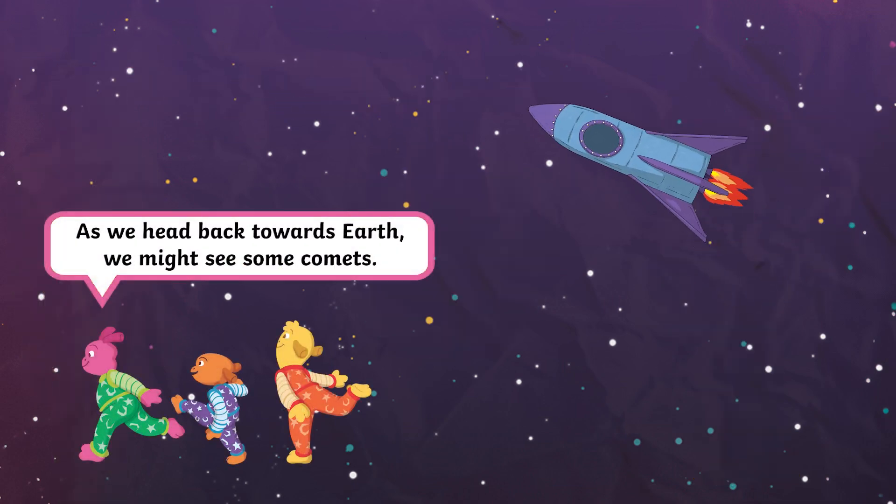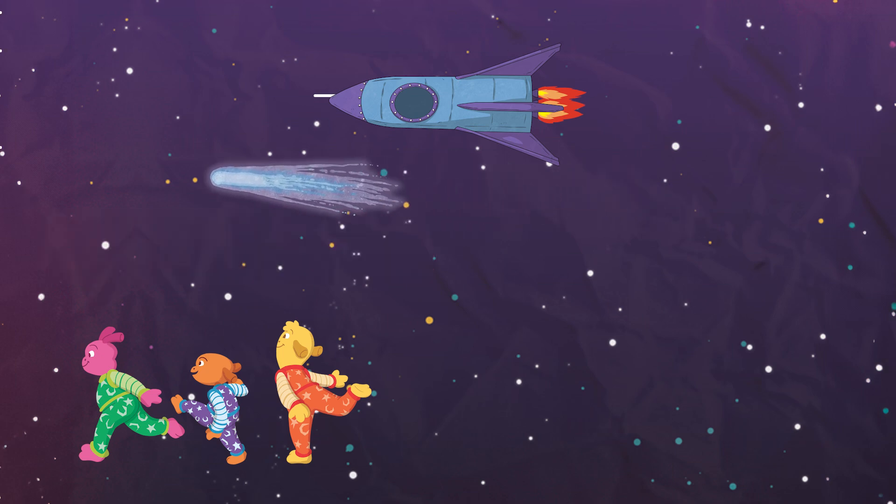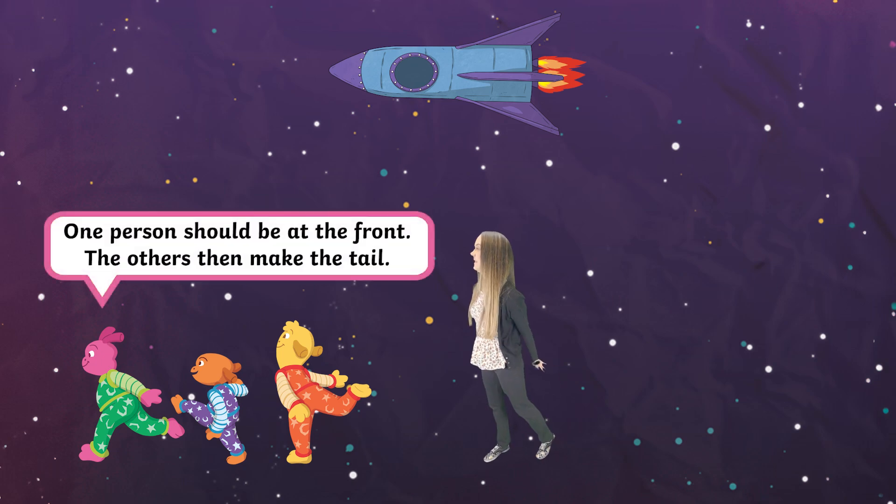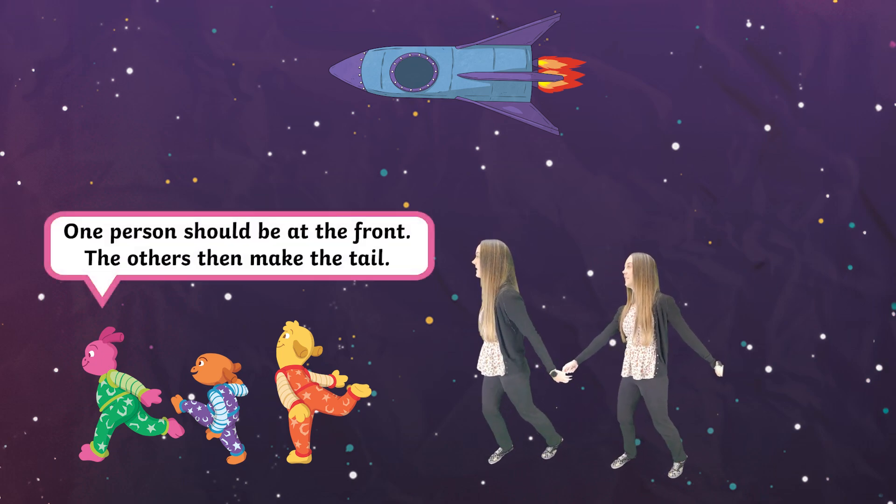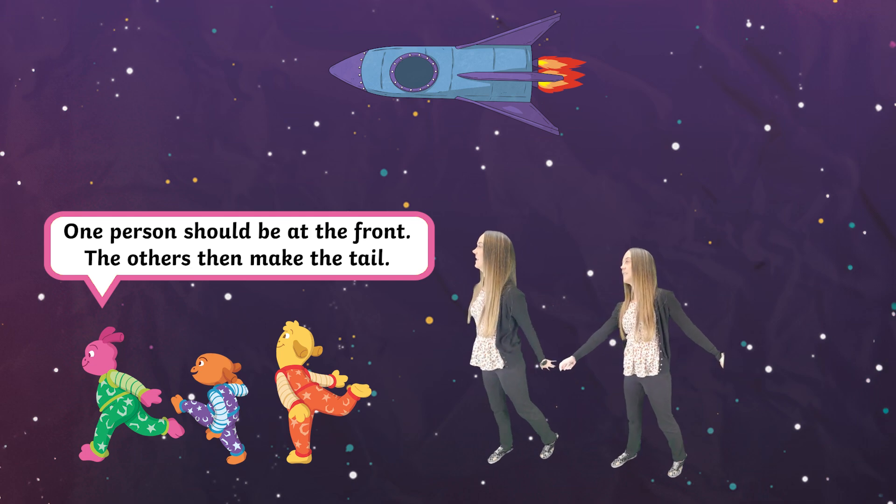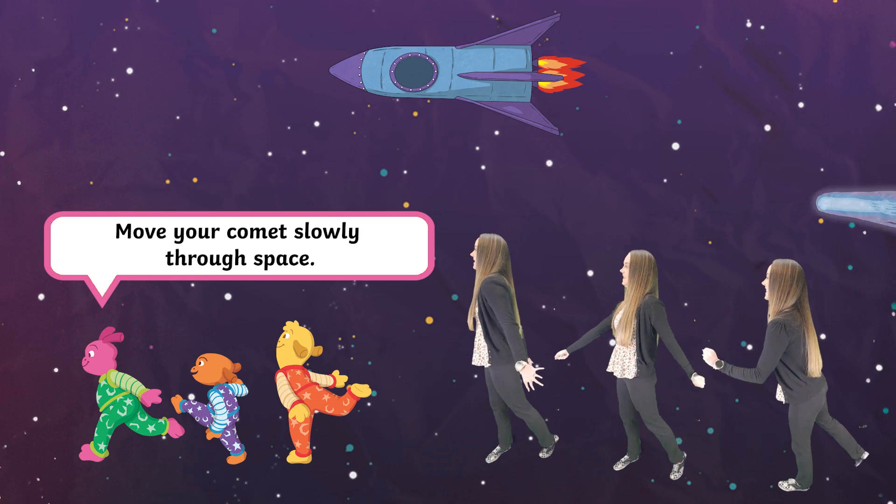As we head back towards Earth we might see some comets. Can you make a comet shape with a group of friends? One person should be at the front, the others then make the tail. Move your comet slowly through space.